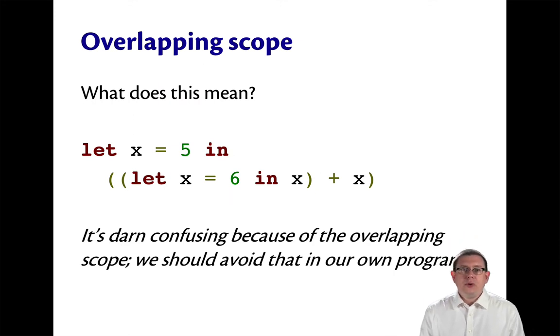What can get confusing is if we have overlapping scope. Here, for example, is a program that looks a lot like one I alluded to earlier, in which I've got overlapping scopes for the name x. Let x equal 5 in, let x equal 6 in x plus x. It's a little bit of a brain twister to try to figure out what that means.